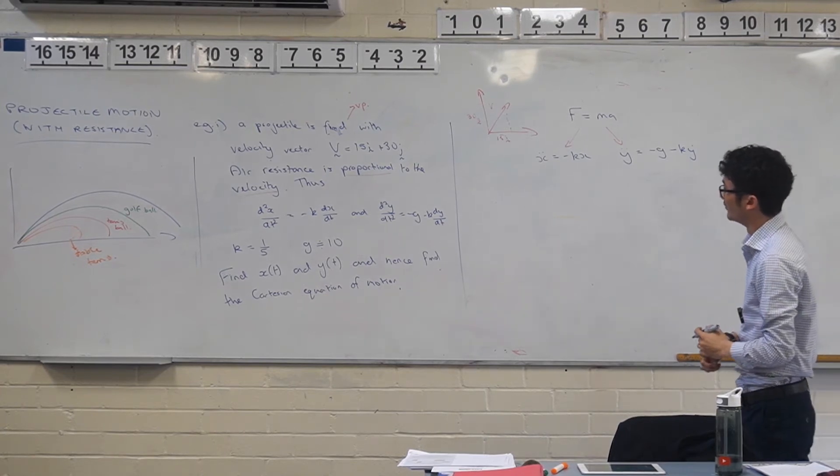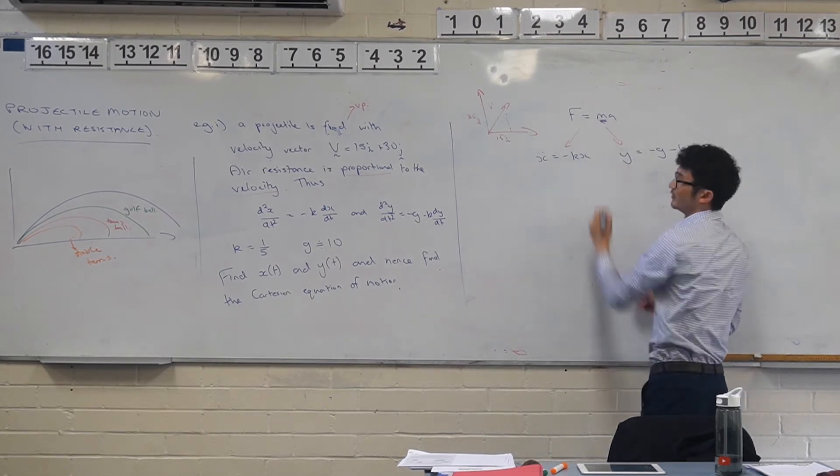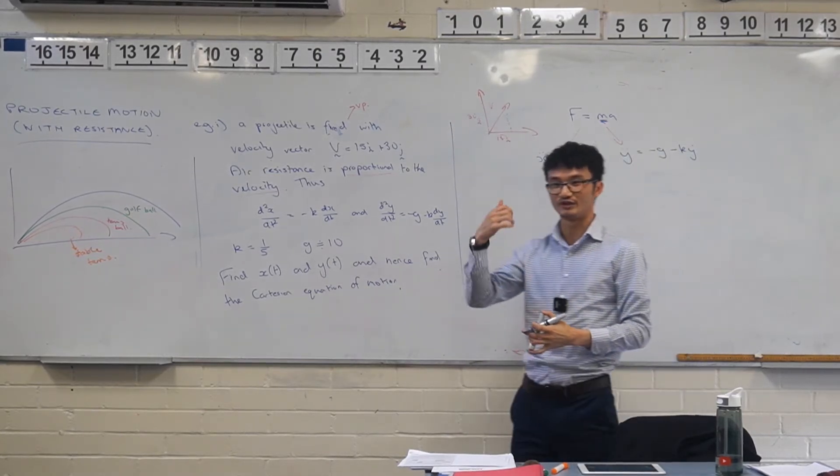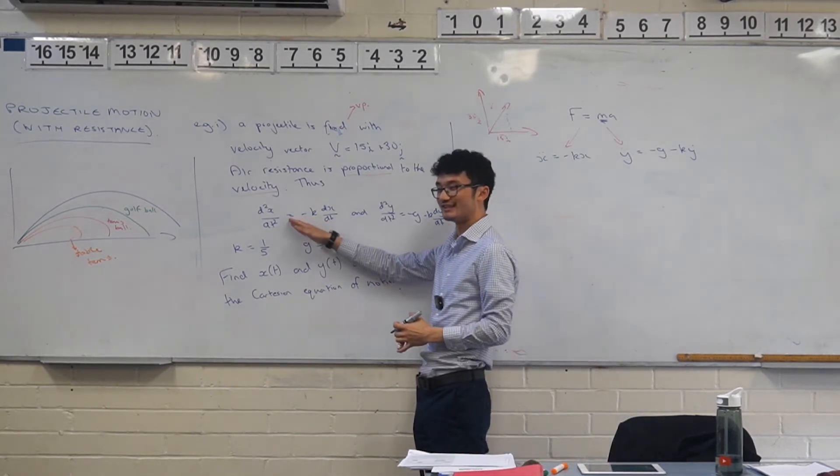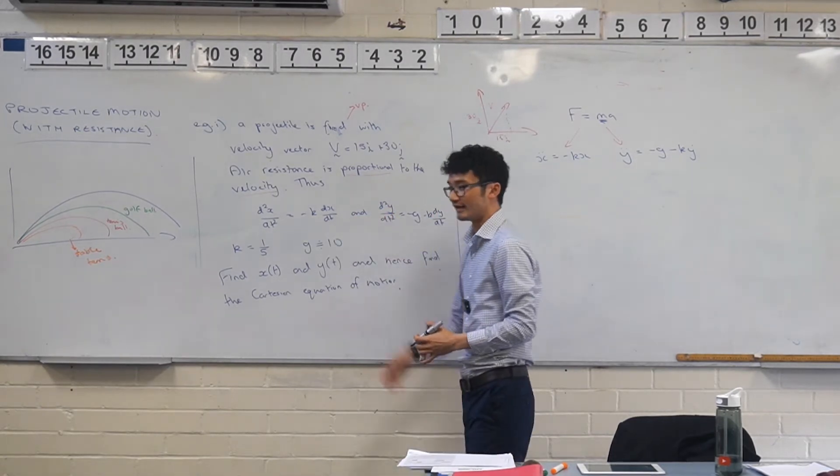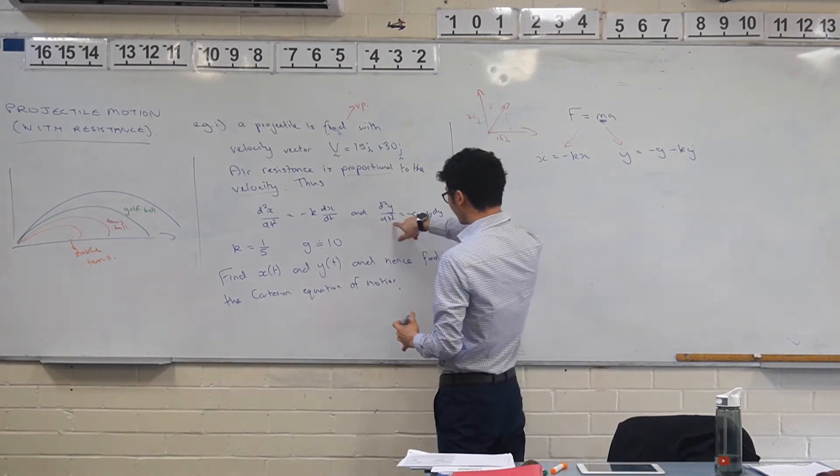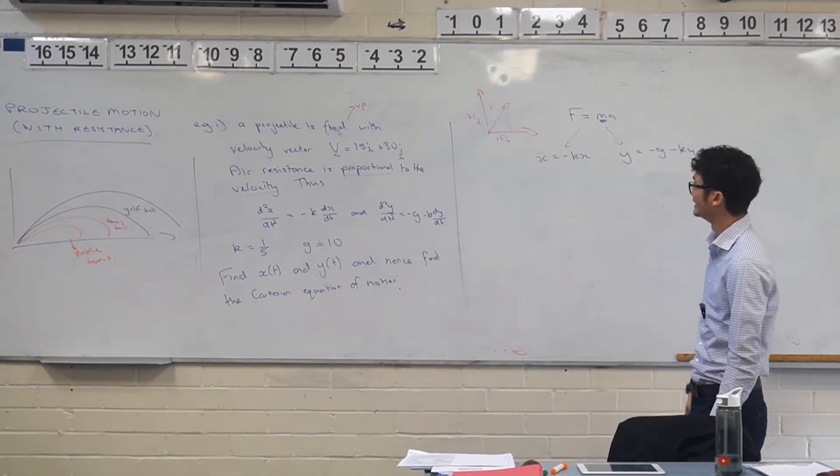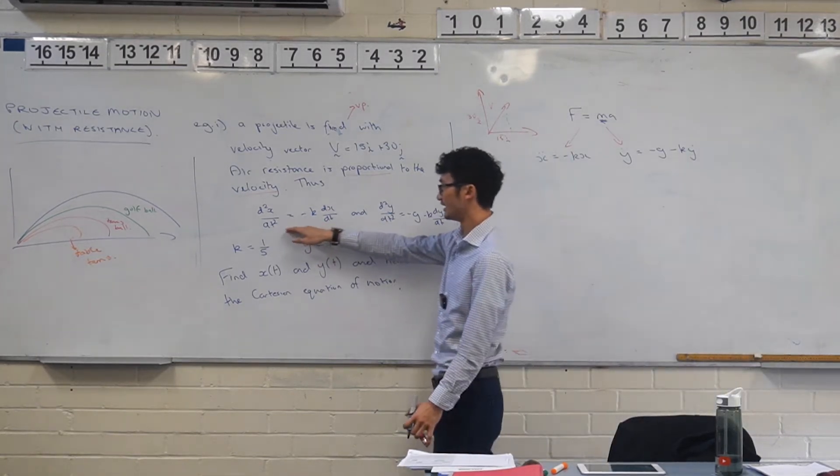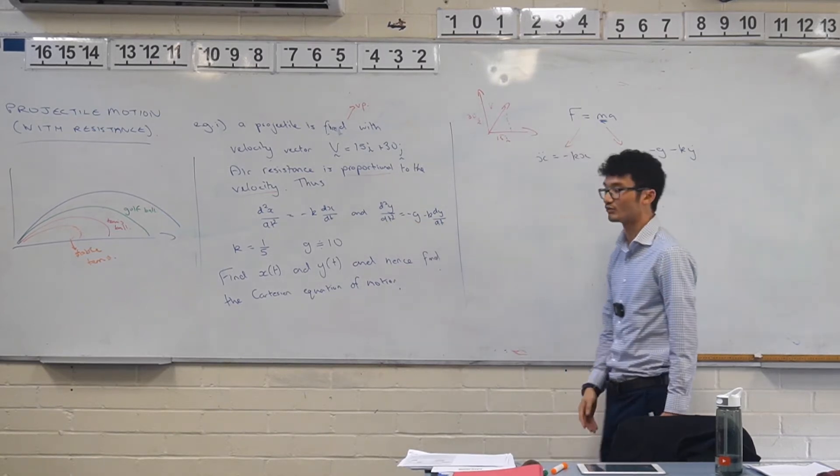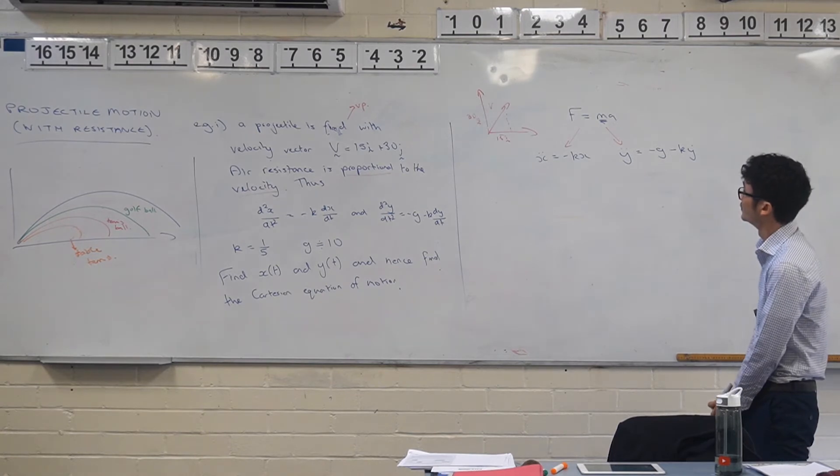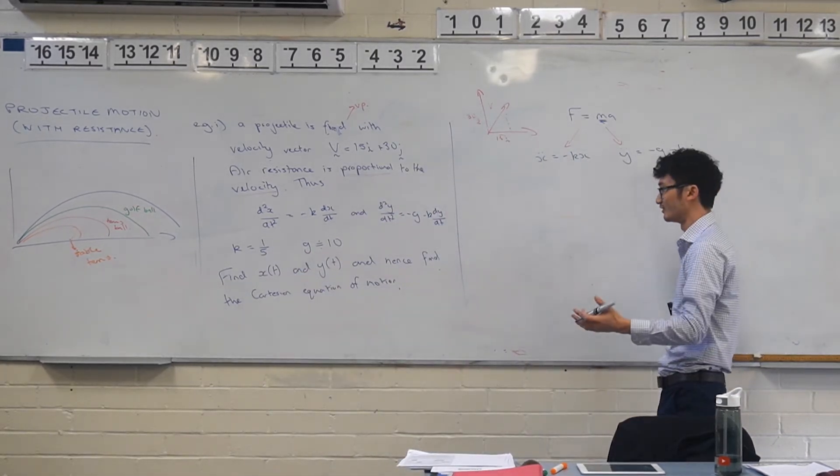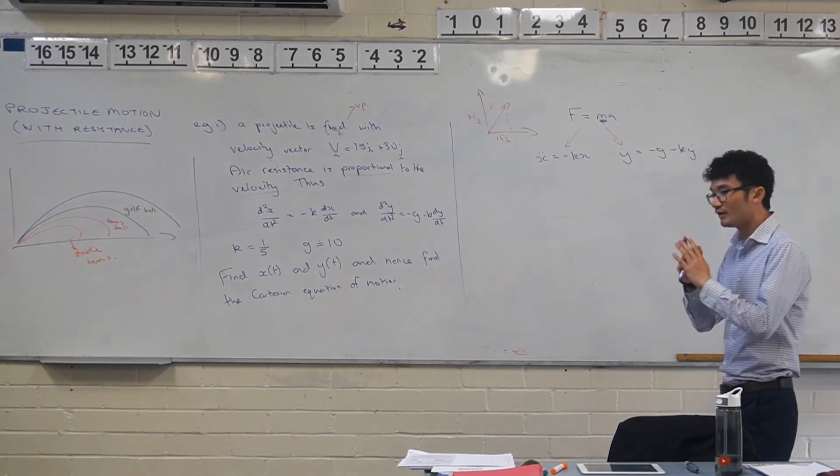Pay attention to the direction. So y double dot equals to minus g minus k y dot. Now, when you're looking at this, remember how we have this potential issue of why do we do this factor of m here? The easiest one is that a lot of the questions sort of just disregard it. They use terms like unit mass, or they just straight up give you equations that don't even have the mass in it at all. Unit mass is what they tend to do.